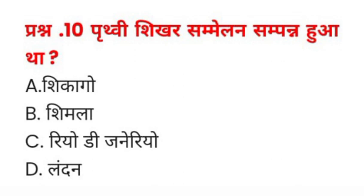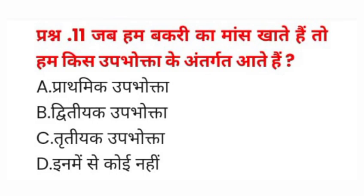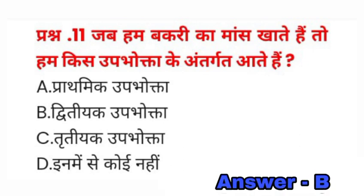Question number ten का सही जवाब C) Rio de Janeiro होगा। Question number eleven: जब हम बकरी का मांस खाते हैं तो हम किस उपभोगता के अंतर्गत आते हैं? A) प्राथमिक उपभोगता, B) द्वितीयक उपभोगता, C) तृतीयक उपभोगता, D) इनमें से कोई नहीं। इसका सही जवाब B) द्वितीयक उपभोगता होगा।